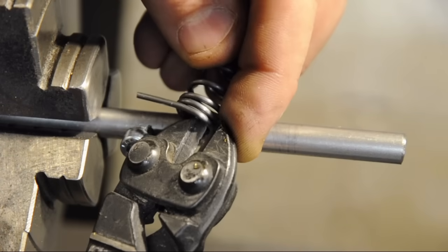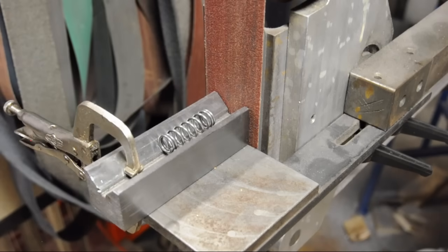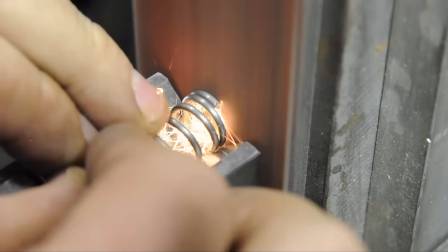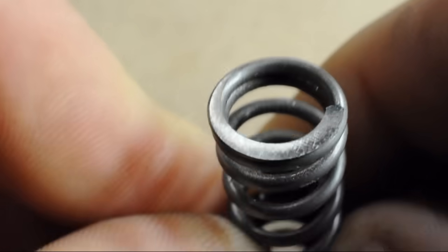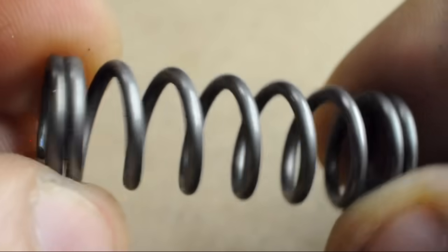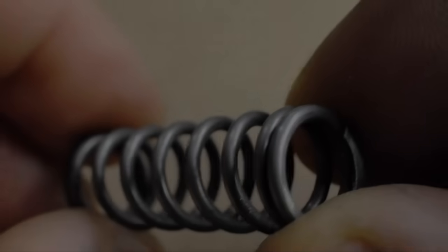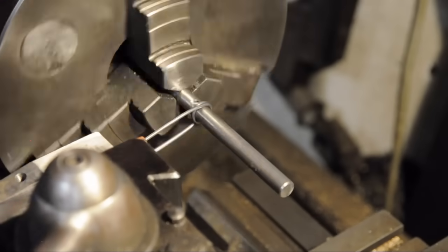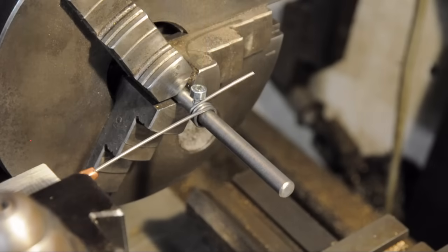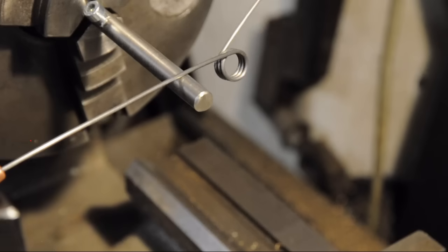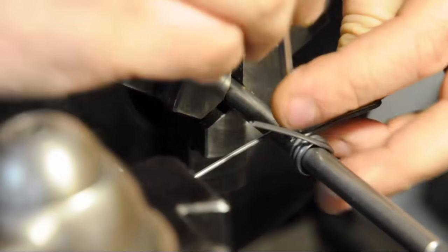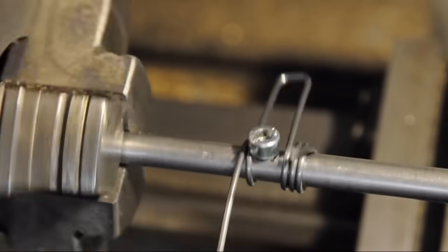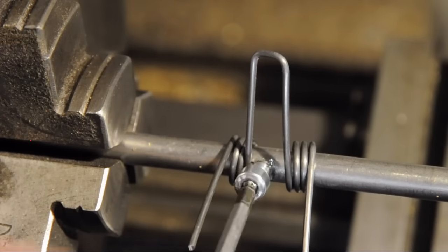Trim the ends. A v-block and belt grinder make quick work of squaring the spring. Torsion and extension springs are wound the same way. With some patience and a bit more care than being demonstrated, you can make quite the handsome springs at home.